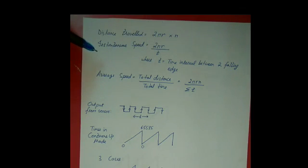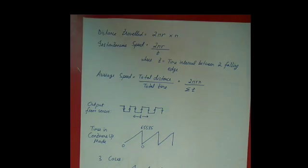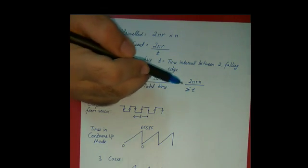Instantaneous speed is taken as the speed of the cycle in one rotation of the wheel of the cycle. So we are taking instantaneous speed as 2πr / t, where t is the time required by the cycle to cover one rotation of the wheel. Average speed is taken as the total distance travelled by the cycle by total time taken which is equal to 2πr × n / Σt.